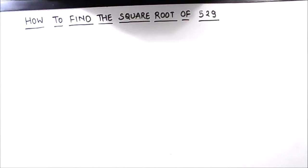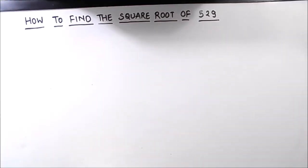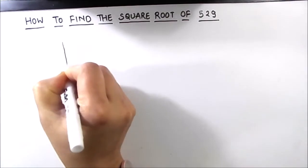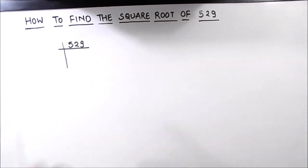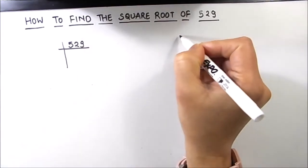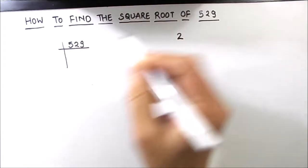Hello everyone. Today in this video we are going to learn how to find the square root of 529. For finding the square root we are going to use the prime factorization method. In this method we find the prime factors of the number and write the number as the product of its prime factors, and then we can find the square root. So let us now find the factors of 529.